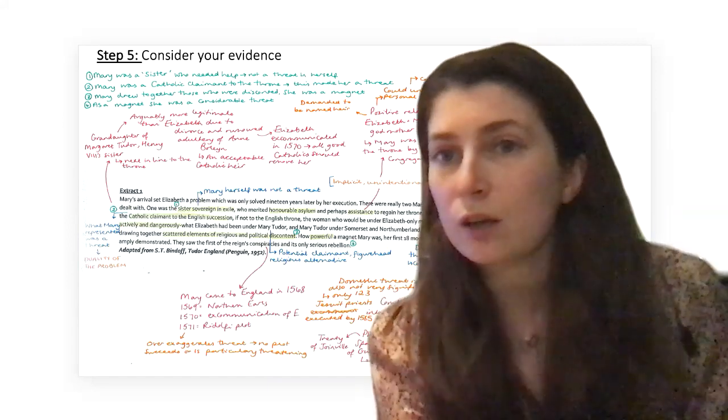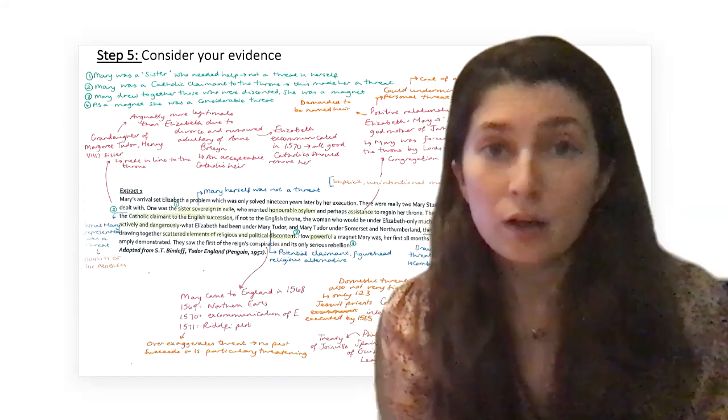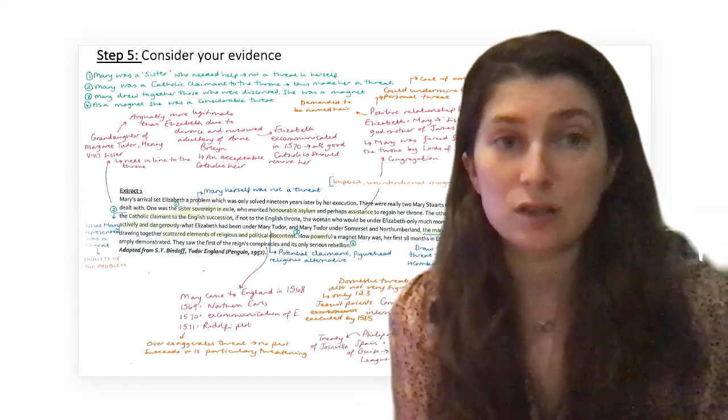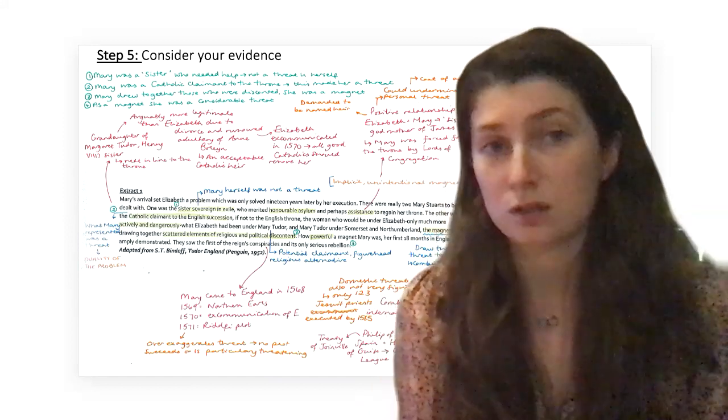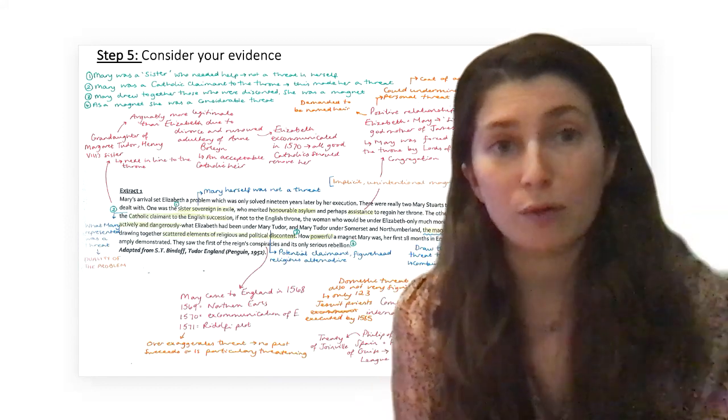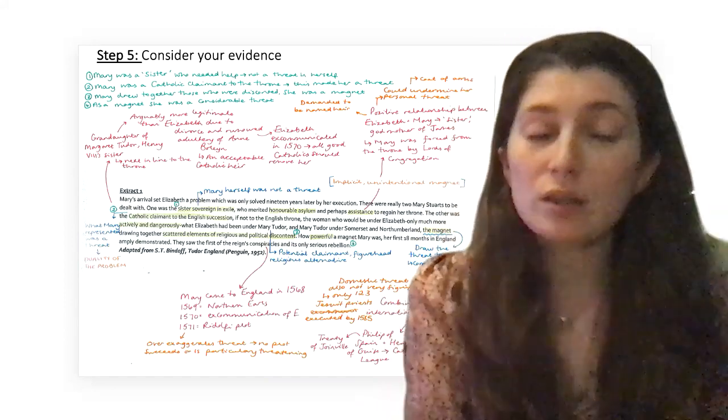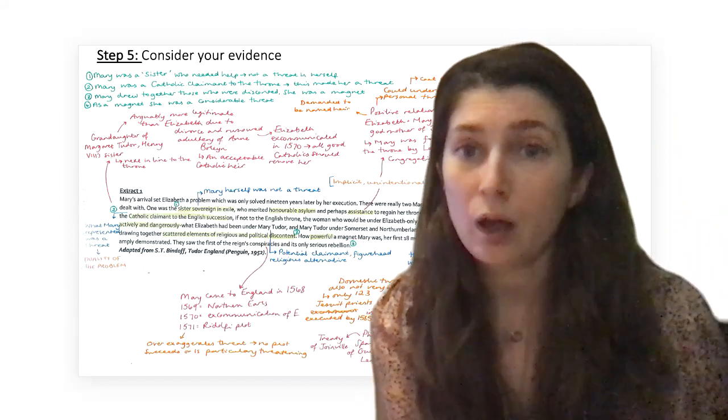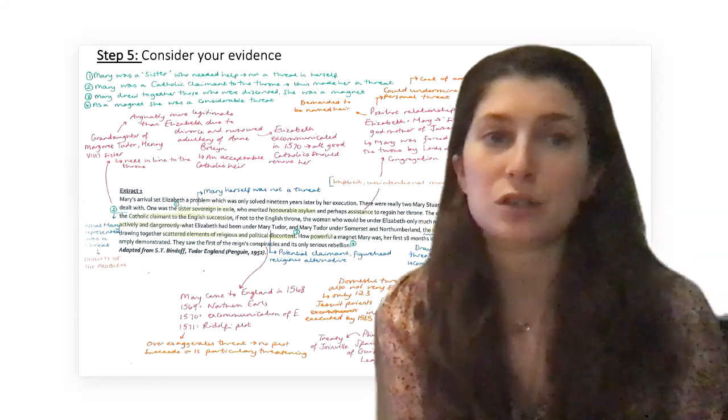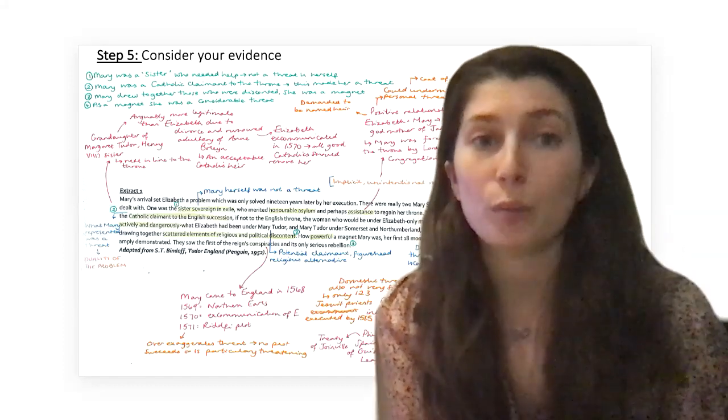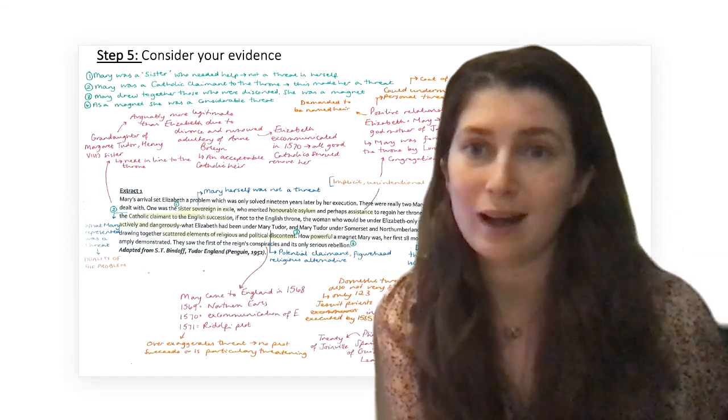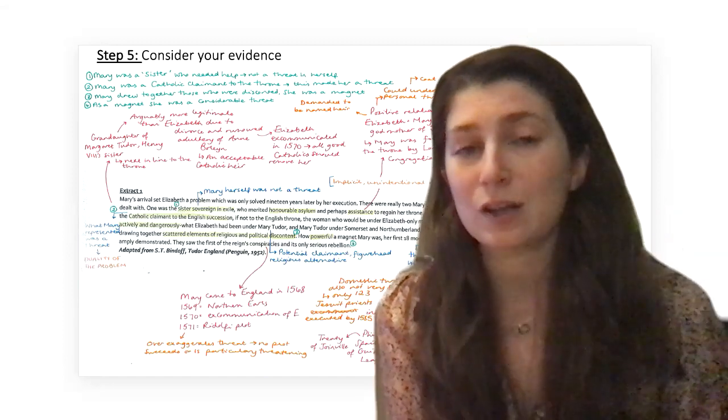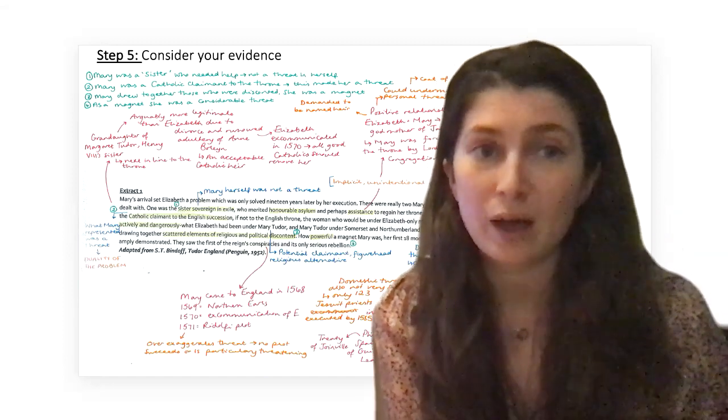For my point number one, that she was a sister who needed help, I think about the positive relationship evident between the letters between Elizabeth and Mary—they call each other sister, Elizabeth becomes the godmother of Mary's child James. Mary is forced from the throne by the Lords of Congregation, which would warrant her in need of Elizabeth's help. Then I've thought of some nuances—that is the case but there are complexities to that relationship. Actually some of Mary's actions did directly undermine Elizabeth's role, and maybe perhaps Bindoff is being a little too generous to Mary.